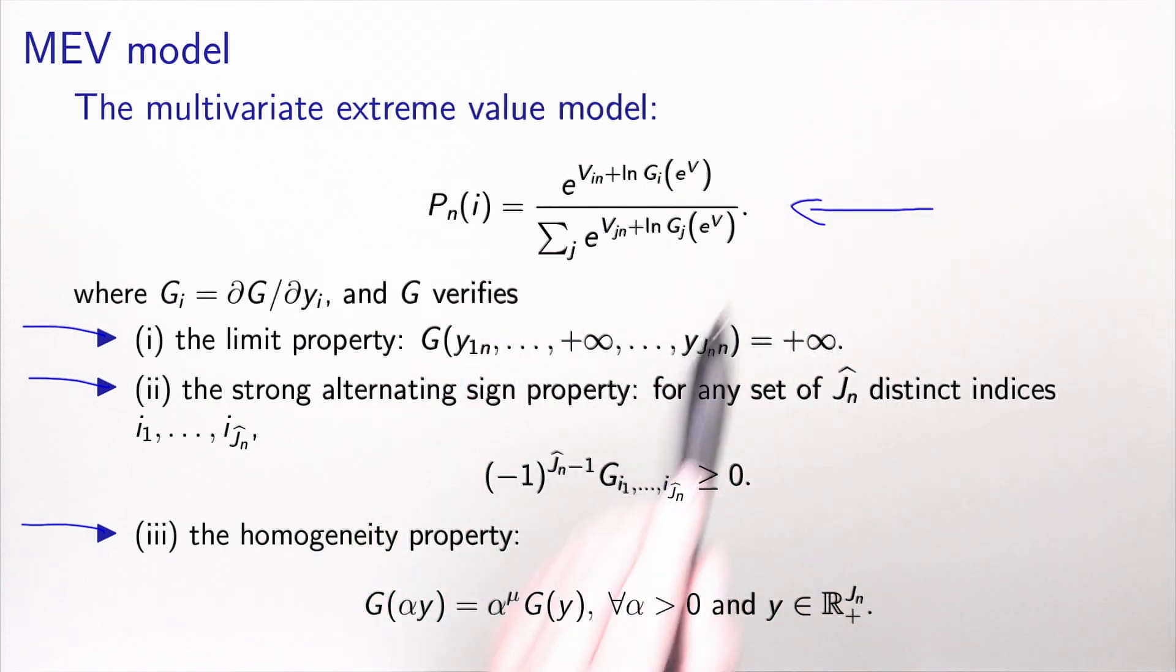If you remember, it looks like a logit model, where the utility of each alternative has been corrected by this term that captures the correlation among the alternatives. So if I want to derive a model from this family, I have to specify the G function. If I give you the G function, you can use this MEV framework to derive the choice probability.